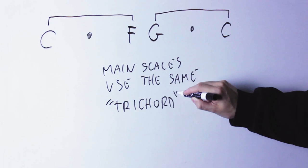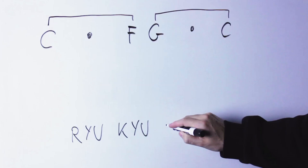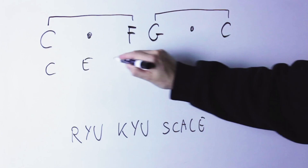The first scale is called the Ryukyu scale. It's the one you obtain if, in your trichord, the middle note is a major third above the lowest note. So, in this case, the scale is C, E, F, G, B, C. Here I'll play it over a C drone.